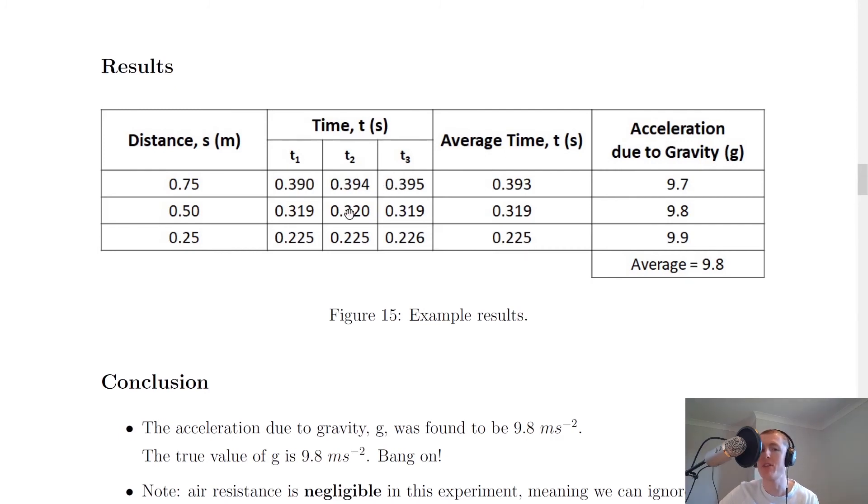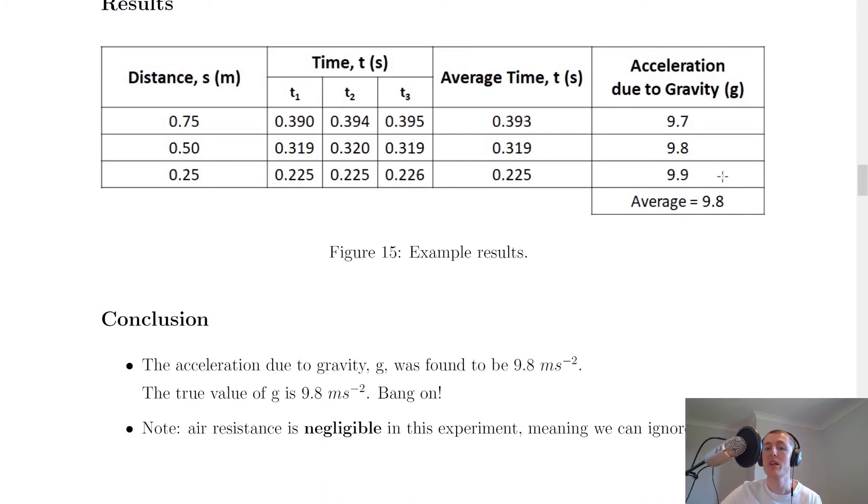We then obtain the average time values by adding up each row and dividing by three. So we add up these three and divide by three, add up these three and divide by three, and then do the same for this one to get these results. And once we plug in our average times and our distance s values into the equation, then we get these results here. Now notice that when I take an average, that our acceleration due to gravity G, it was found to be 9.8 meters per second squared. That's pretty accurate, pretty bang on there because the true value or accepted value of G is 9.8 or 9.81 in fact, meters per second squared.